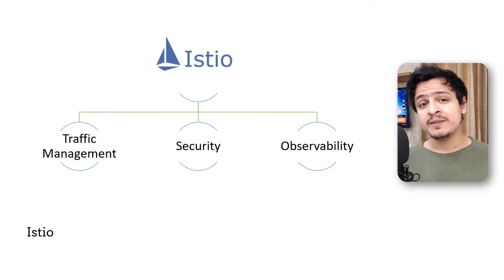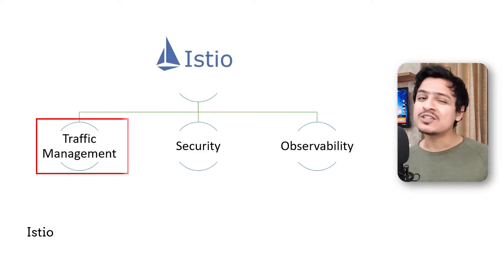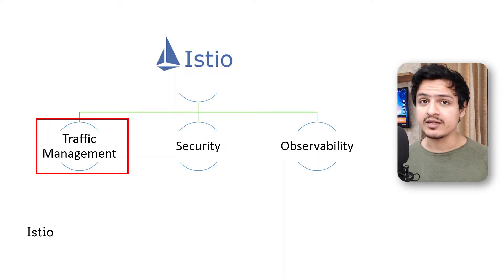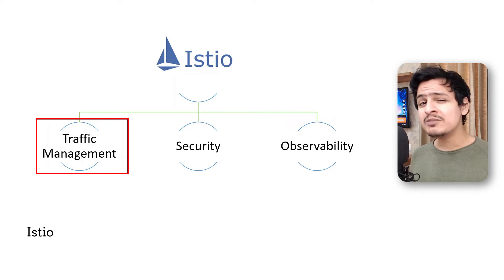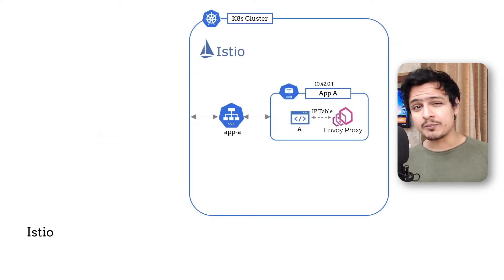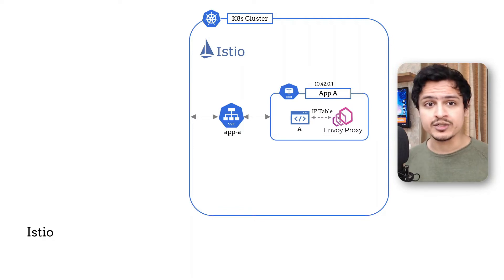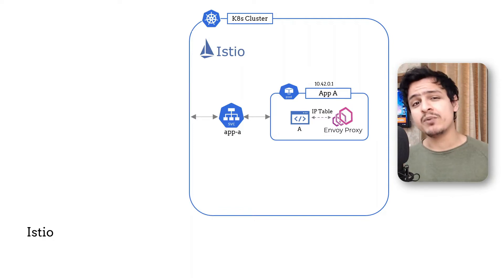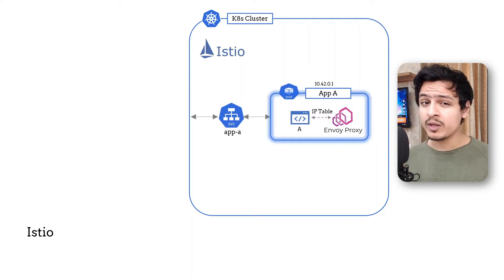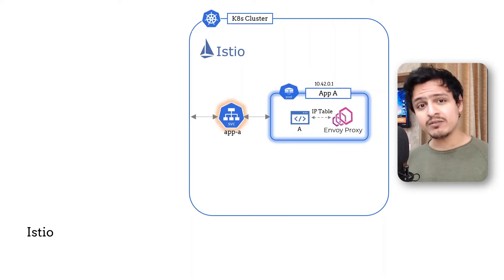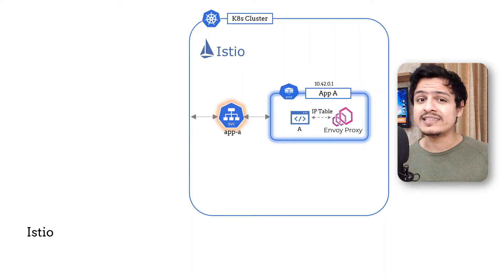Istio is a huge beast to cover, so we'll just focus on the traffic management aspect for the REST APIs today. In the previous video, we saw how Istio aims to be transparent — it injects a proxy inside each one of our pods to intercept all communication. What this implies is that we still need a deployment object to start our pods and a service object to create a network identity or domain name for us.